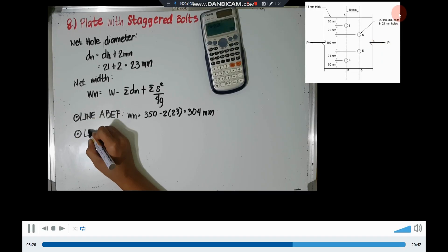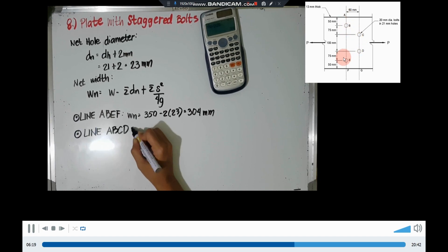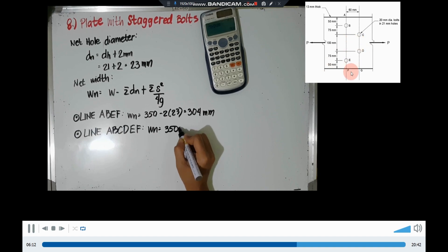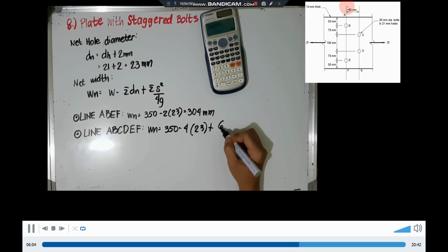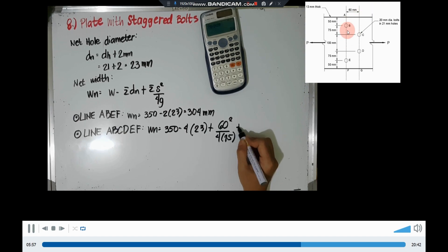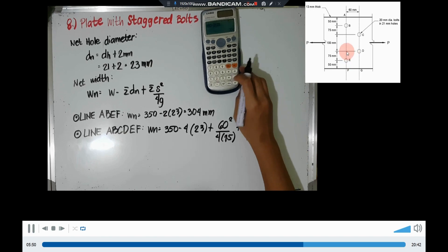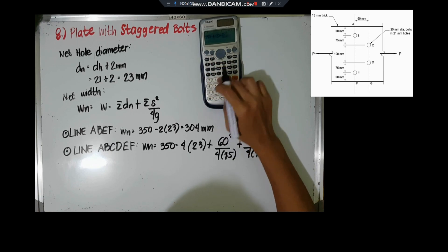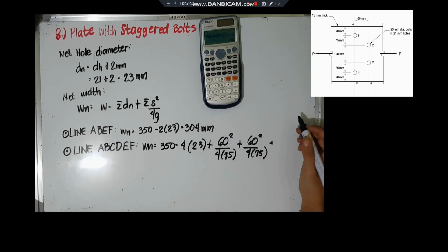Next, for line ABCDEF: 350 minus 4×23, plus 60²/(4×75) plus 60²/(4×75). This equals 282mm.